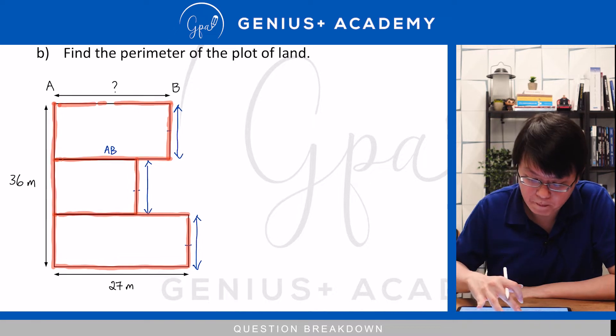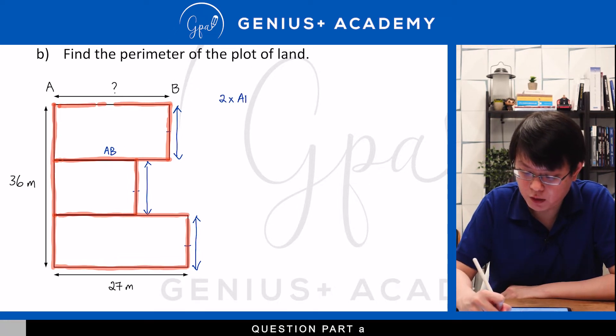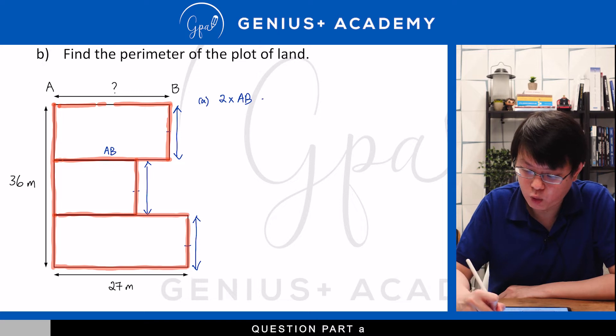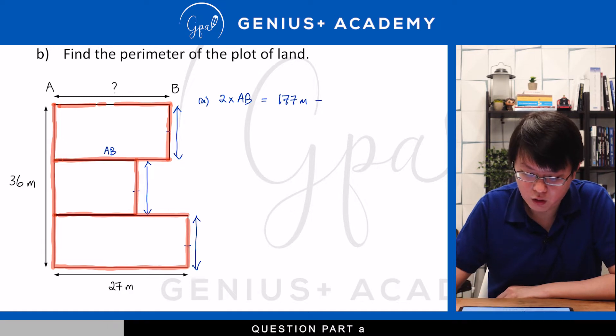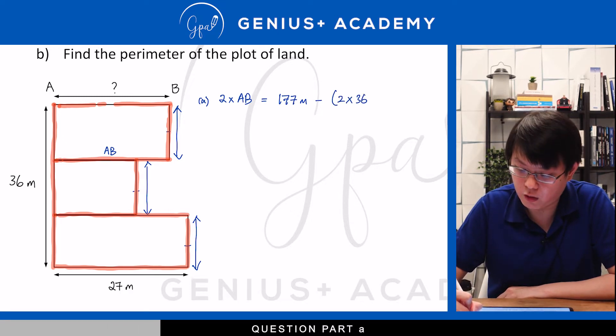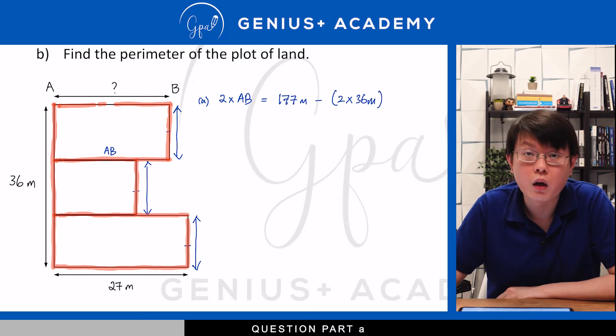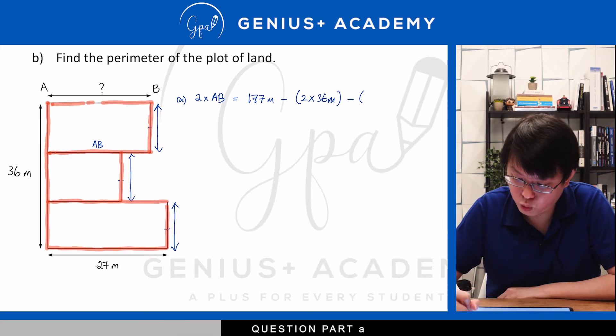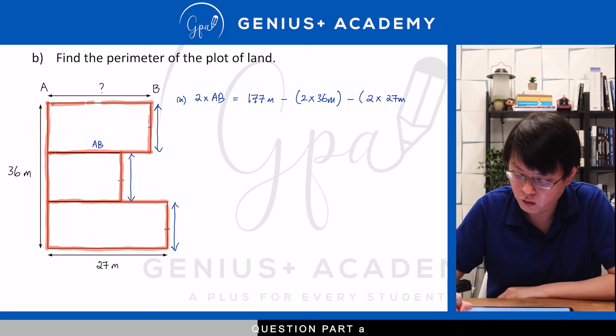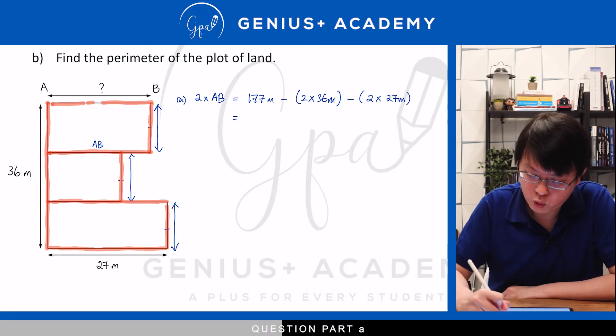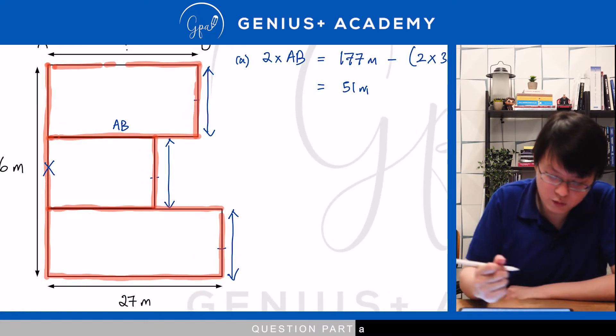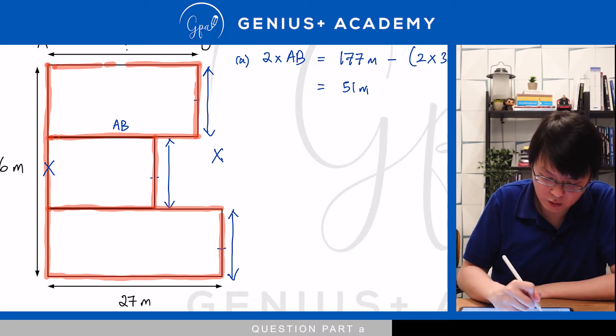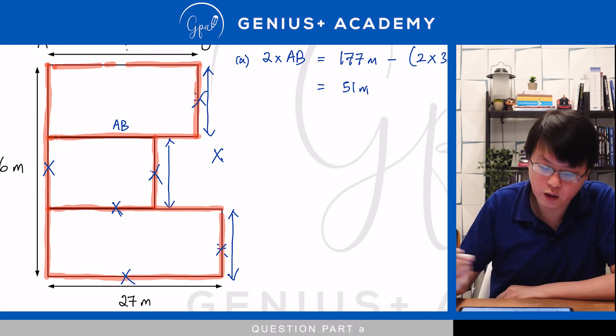How do we go about doing that? Two times of AB will be equal to your total perimeter of the fence. And then you will subtract 2 times of 36 because that is your left and right. And then you minus away 2 times of the 27 metres. And that will give you 51 metres. To make it clearer, if I were to label in the diagram when I remove this and this part and this part and this part, that is where I get 2 times of AB.